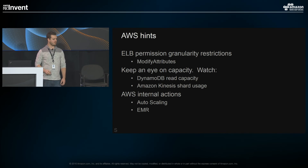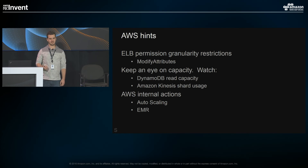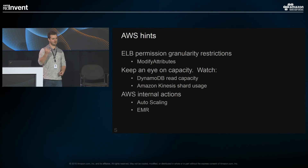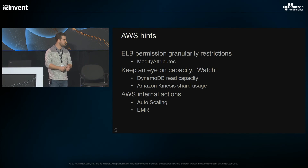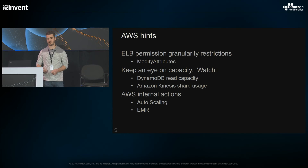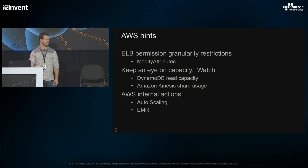Some AWS hints: the ELB permission — the role has to have permission to modify attributes to turn on ELB access log delivery, but this also grants a couple of permissions you probably don't want, like connection draining and cross-zone load balancing. Since there's no way to limit those specifically, you kind of just have a gentleman's agreement with your product teams. You'll also want to keep an eye on your capacity — things we've run into include DynamoDB read capacity and Kinesis shard usage, though both are relatively easy to modify after resources are created. Also, not every action in CloudTrail is human-initiated — auto scaling actions and Elastic MapReduce are both called by AWS, and you may want to create suppressions on those two services.